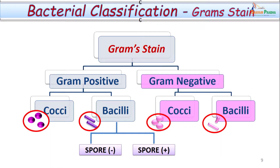Another way to classify bacteria is based on the Gram stain — a simple and wonderful staining technique. Gram stain helps us divide bacteria into two major groups: gram positive and gram negative. Gram positive ones can be further divided based on morphology into gram positive cocci and gram positive bacilli; similarly, gram negative cocci and gram negative bacilli. Gram positive bacilli can be further divided based on whether they possess spores or not.